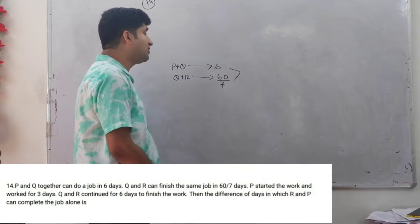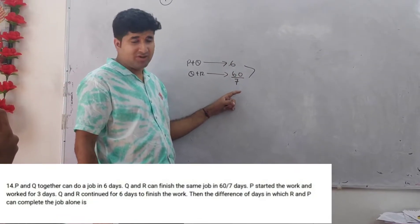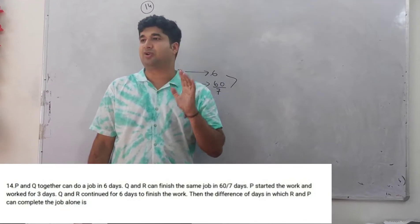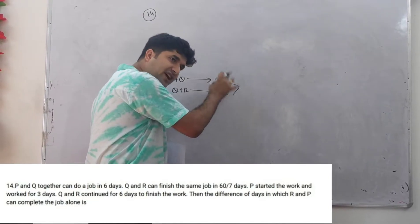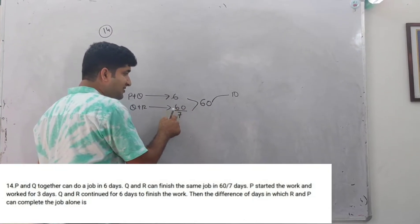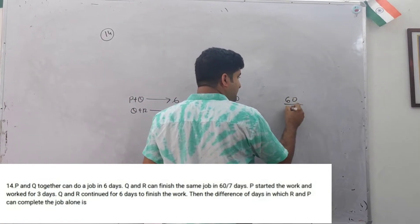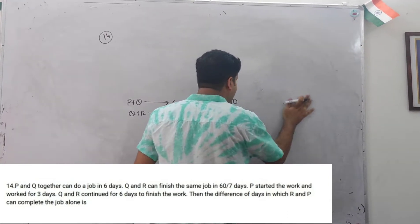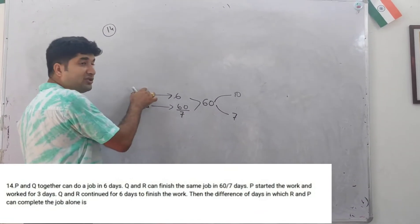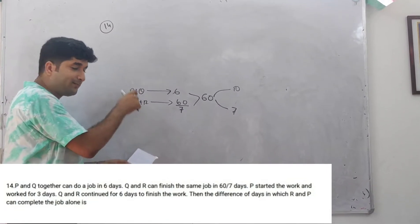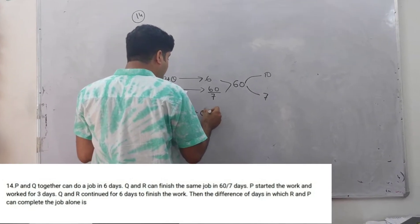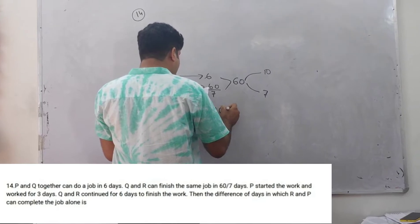P and R can finish the job in the next year. P started the work and worked for 3 days and Q and R continued for 6 days to finish the work.